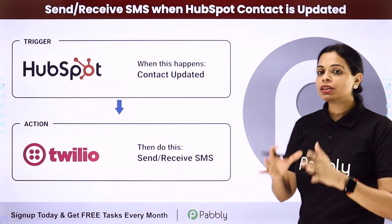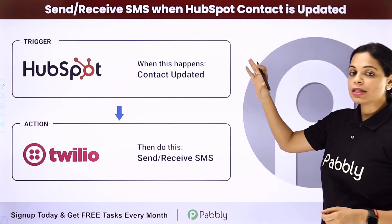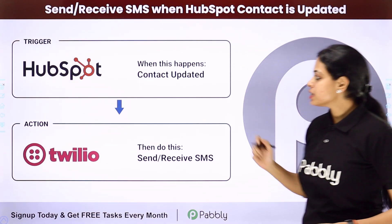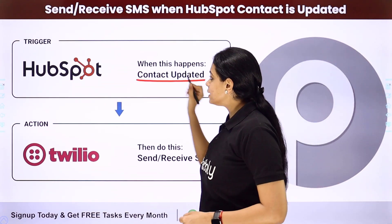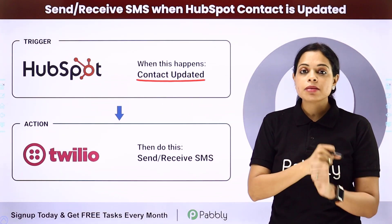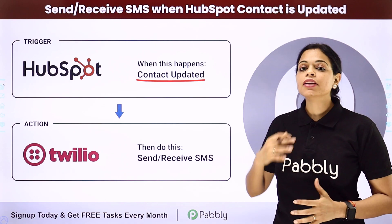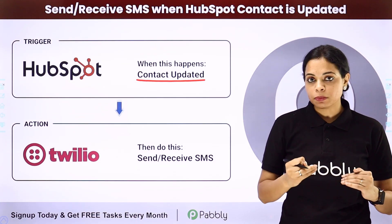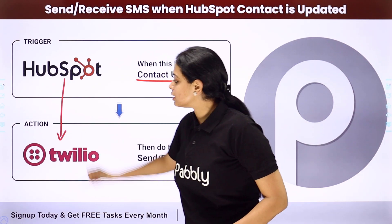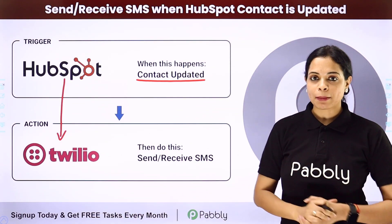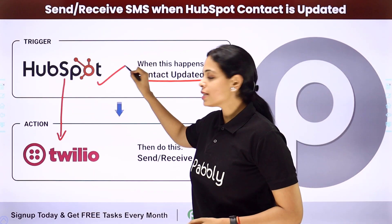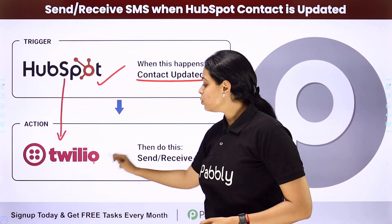In this video, we are going to understand how to send or receive an SMS when a HubSpot contact is updated. My objective is that every time a contact is updated in my HubSpot CRM, I can either send an SMS to the user or receive an SMS as an admin. For this, I'll have to integrate these two applications using Pabbly Connect software.